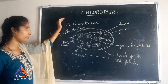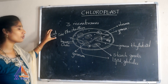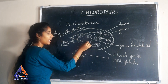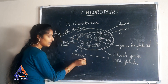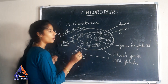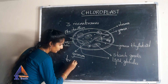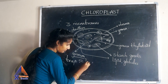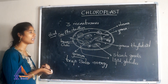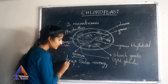Chloroplast contains three membranes: inner membrane, outer membrane, and the third membrane is formed by a sac-like structure called the thylakoid. A group of thylakoids is called a granum. The function of granum is to trap solar energy.